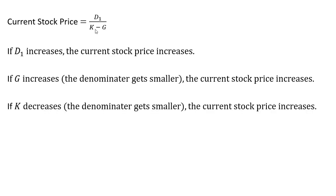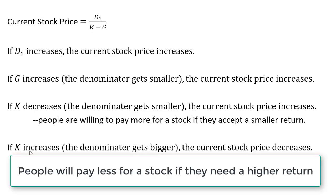If K decreases, the required return on the stock, the denominator gets smaller and the current stock price increases. One way to think about this, people are willing to pay more for stock if they accept a smaller return. And if K increases, the denominator gets bigger and the current stock price falls. Again, a way to think about this is people are willing to pay less for a stock if they require a higher return.